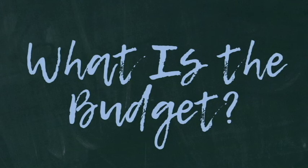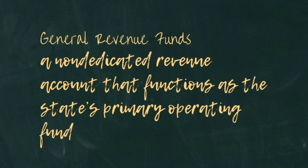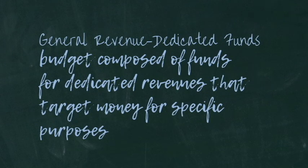The five budget categories are: general revenue funds, general revenue dedicated funds, federal funds, other funds, and all funds. The general revenue funds include dedicated and non-dedicated funds. The non-dedicated revenue accounts function as the state's primary operating fund. It also includes three large educational funds: the available school fund, the state instructional materials fund, and the foundation school fund. Funds totaled $106.6 billion for 2018–2019.